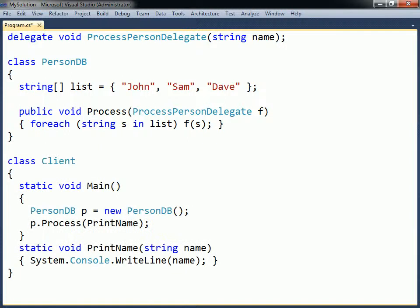The second class is called Client and makes use of the storage class. It has a main method that creates an instance of PersonDB and calls that object's process method with a method defined in the Client class.